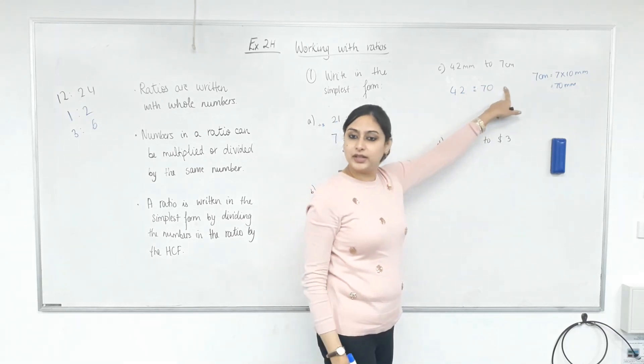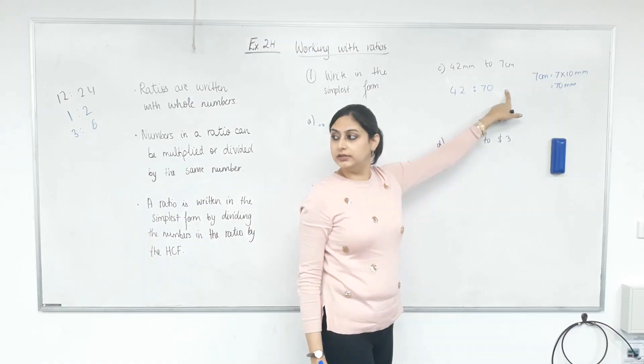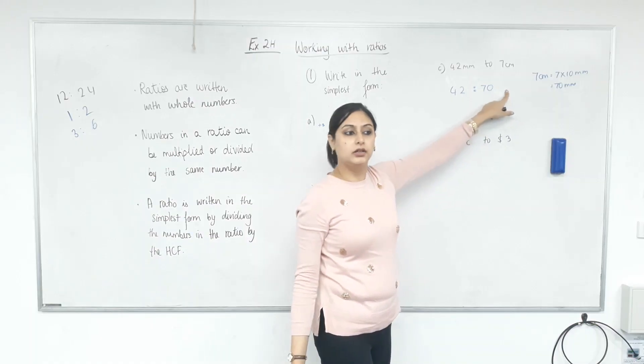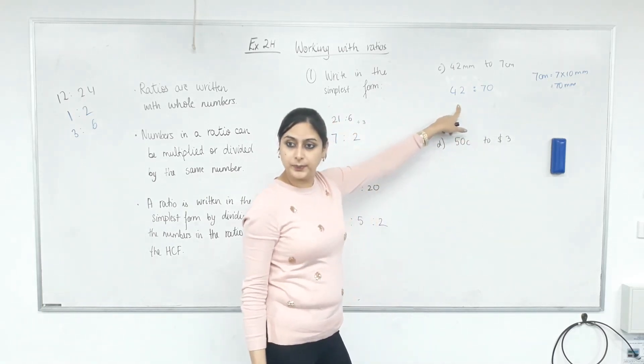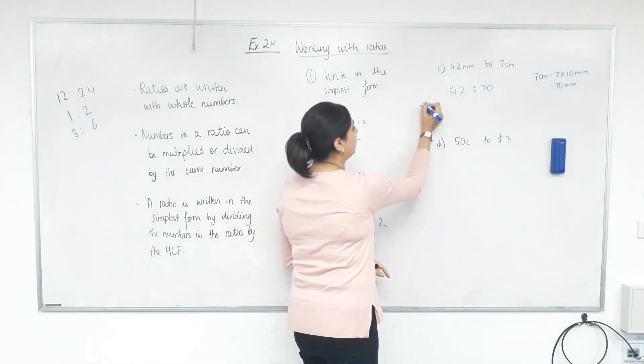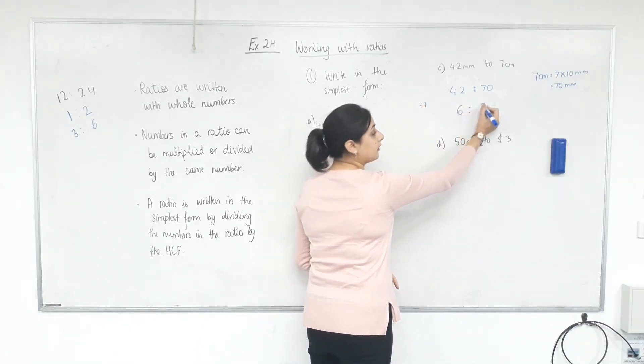Do I need to specify the unit here? Yes. Do I need to specify the unit here? Oh, no. No. Doesn't matter. It's in the same unit. We just write the ratio. 42 and 70. 7? 7. So I'm going to divide both numbers by 7. 42 divided by 7 is? 6. 70 divided by 7? 10.